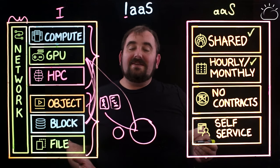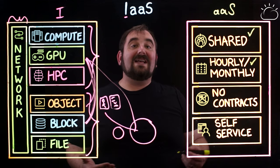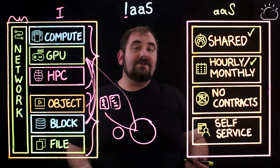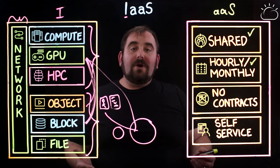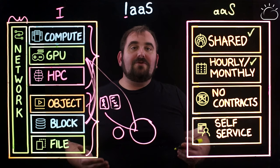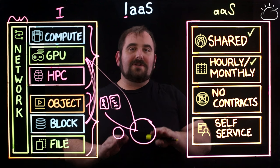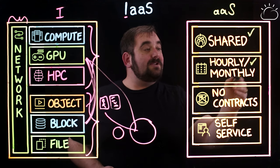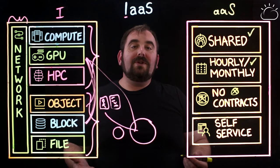The third piece — and this is a very important one — is that there are no contracts involved in an as-a-service model, or at least not necessarily. There can certainly be contracts, but they're generally advantageous to you. By no contracts, we mean you don't have to agree to use something for a set amount of time. You use it for as long as you need it, and then you get rid of it. You only use it when you need it — it's on demand.